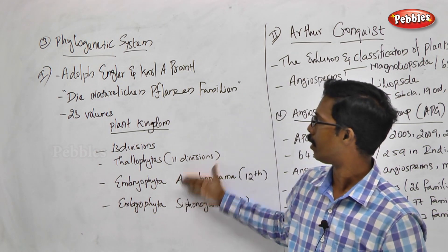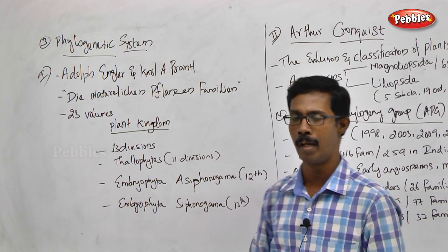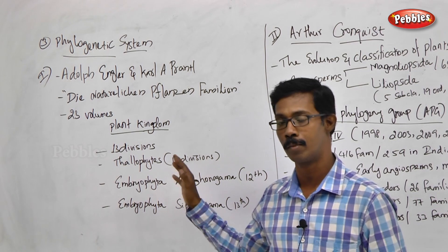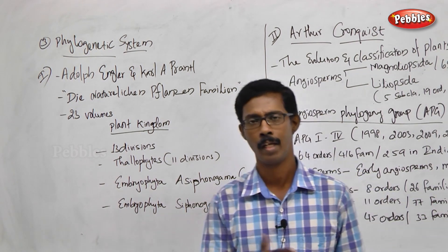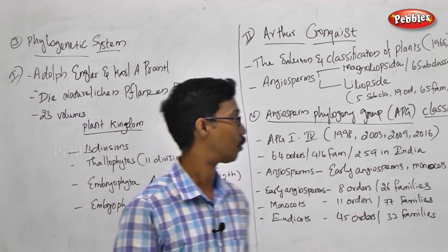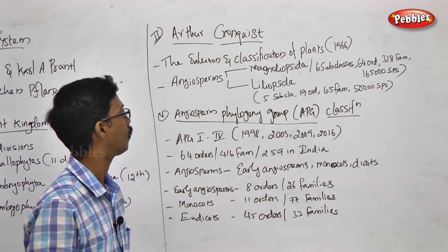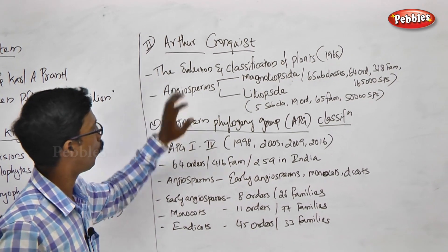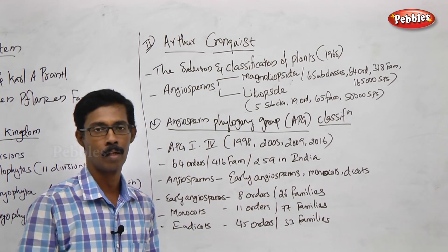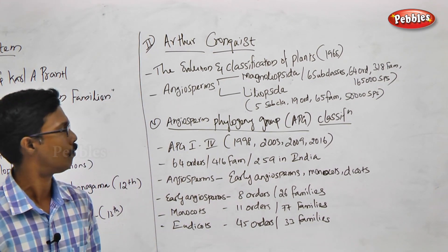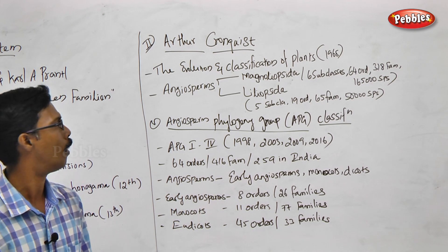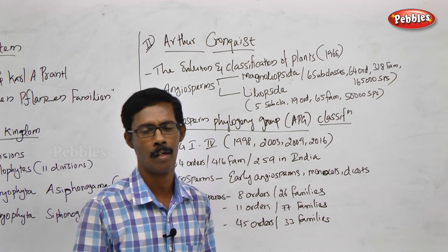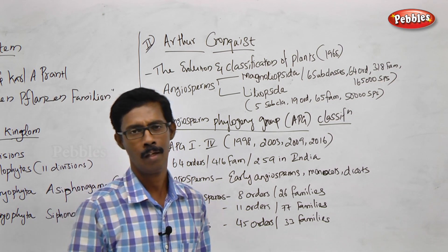This system is followed by Adolf Engler and is called Phylogenetic Classification by Adolf Engler. The next advanced method is by Arthur Cronquist. His book, Evolution and Classification of Plants, was released in 1968.